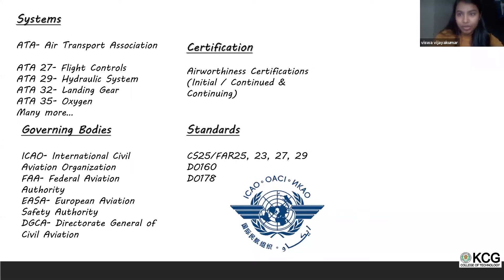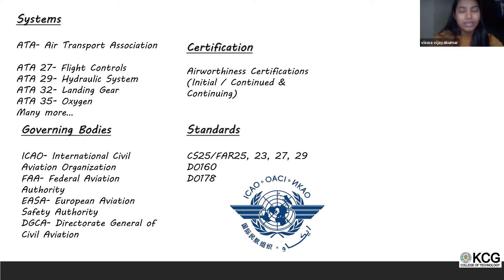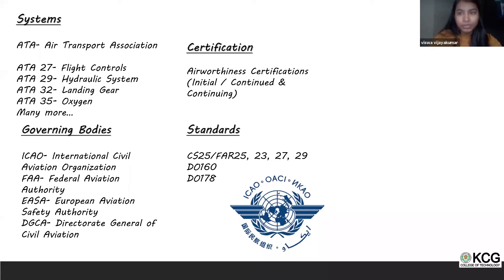Key industry standards include DO-160, which covers environmental standards, and DO-178, which governs all software running in the aircraft. CS25, FAR25, FAR23, FAR27, and FAR29 are component part standards. All this information is available on open source, and I request all students to have a look at it before stepping out of university.